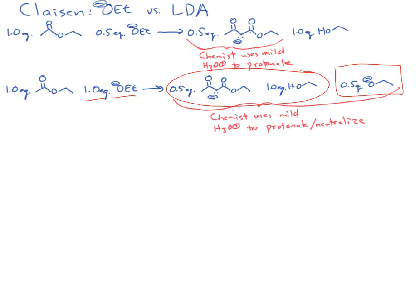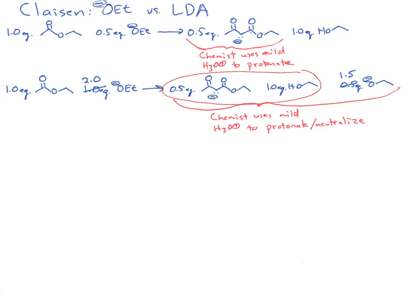Adding more ethoxide doesn't change the products we get. When the chemist uses mild acid to protonate and neutralize the solution, a little bit more acid is needed. Shifting to two equivalents of ethoxide gives the same story — we get the same products out of this reaction. The Claisen reaction is occurring, but we just have more base left over. This reaction would go faster, generate the same product, and after neutralization with acid we would have the same beta-ketoester.